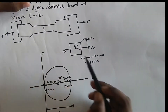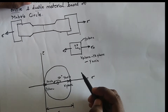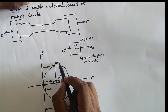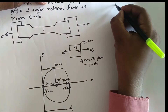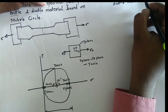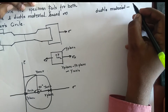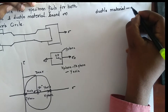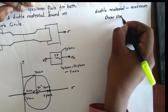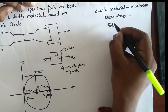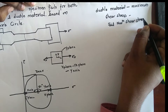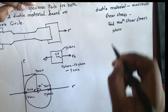We need to find out where the principal planes are acting and where the maximum shear stress is acting. This is our maximum tau. Ductile material always fails due to maximum shear stress, and it fails on the maximum shear stress plane.